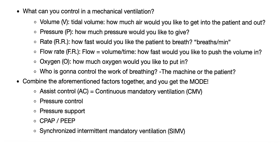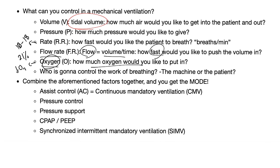Volume — tidal volume — is how much air you want in and out of the patient. Pressure is how much pressure you want to give. Rate is the respiratory rate, normally 12 to 18 breaths per minute, but now you control it. Flow rate is volume over time — how fast you push the air in. And oxygen: FiO2 is normally 21% in the atmosphere, but you can increase it to, say, 50% in cases of hypoxia — which has its pros and cons.